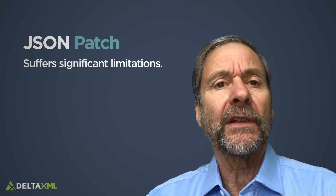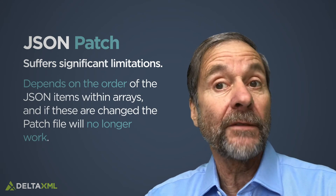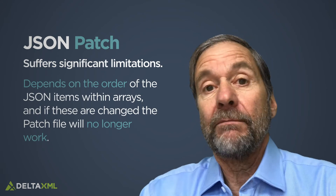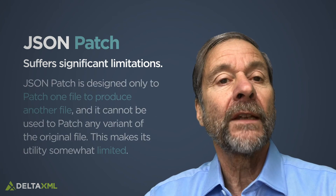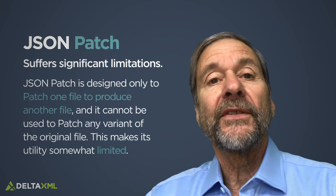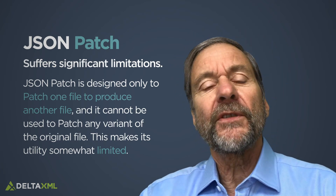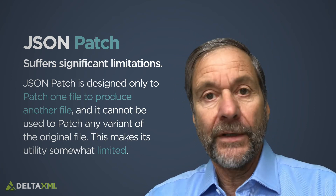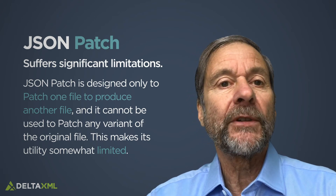The reason why we don't use JSON patch is that it suffers from a number of significant limitations. For example, it depends on the order of the JSON items within arrays, and if these are changed the patch will no longer work. JSON patch is designed only to patch one file to produce another and it can't be used to patch any variant of the original file, which makes its utility somewhat limited.